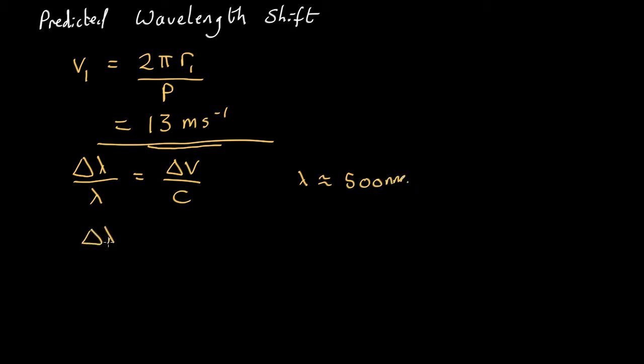This gives us that the wavelength shift is equal to the velocity, so 13 metres per second divided by 3 by 10 to the 8, times the wavelength, say 500 nanometres, which comes out as 2.2 by 10 to the minus 5 nanometres. So a very, very small shift in the wavelength.